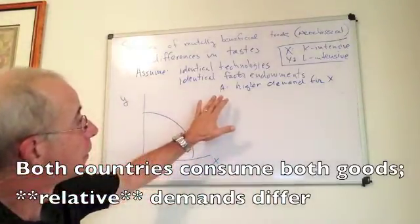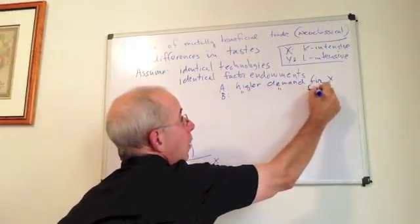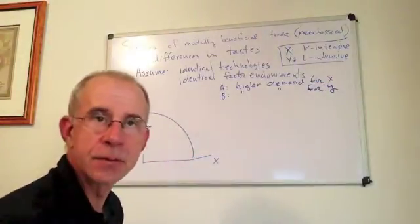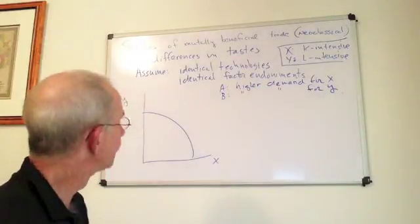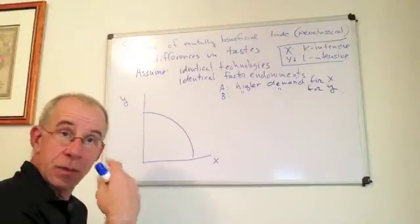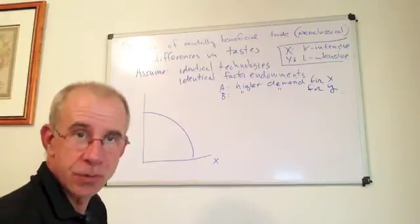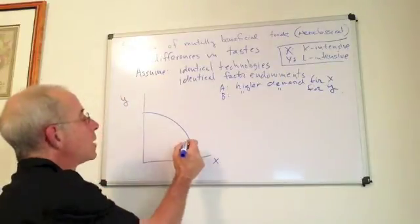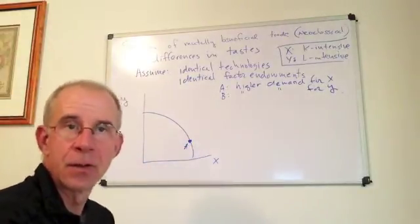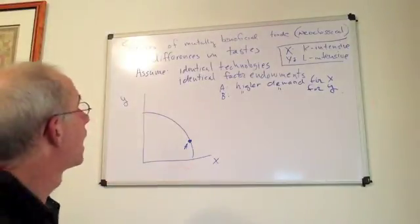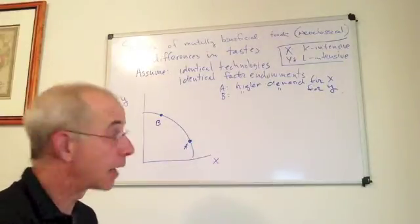But let's assume that A has a higher demand for x than does B, and B has the higher demand for good y. So they just like different things. Now first of all, let's take a look at the autarky situation. So country A, before it trades, is going to depend on its own resources to produce good x. So they're going to have relatively higher demand for x in autarky, and country B is going to have relatively higher demand for y.